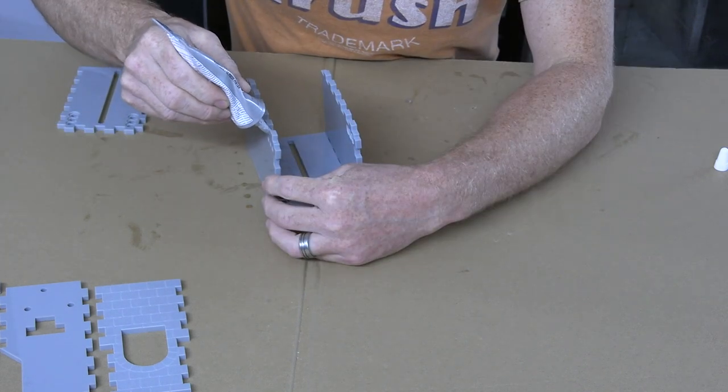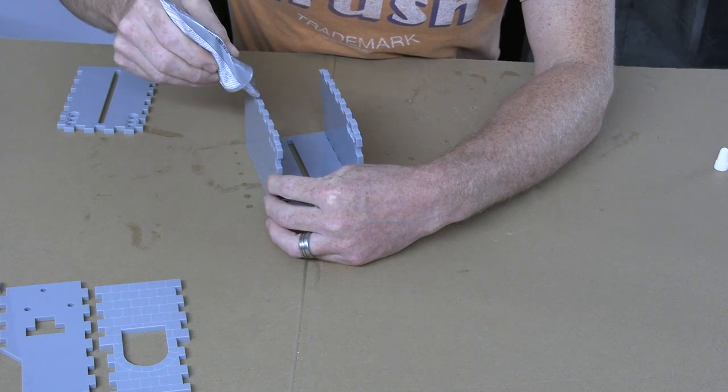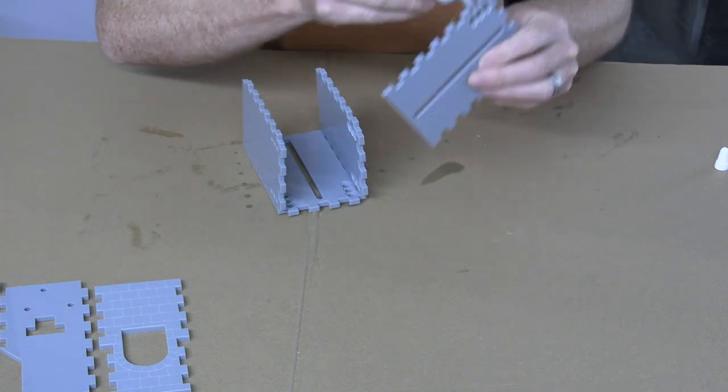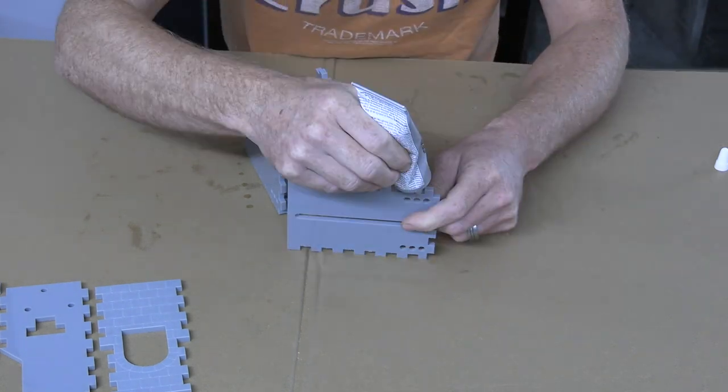For the last section, lay what you have on its back and apply glue to all of the box joints that are facing up. Then do the same for the last remaining piece of the case and mate them together.